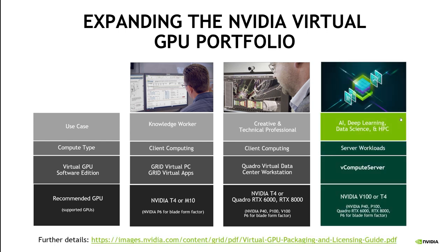The fourth license is vCompute Server, which is relatively new. It's for users who don't need graphics at all on their virtual desktops and want to split a GPU to run artificial intelligence, data science, or high-performance computing workloads. A 90-day evaluation license is available with 128 licenses by default, and in some cases you can apply for larger evaluation allocations.